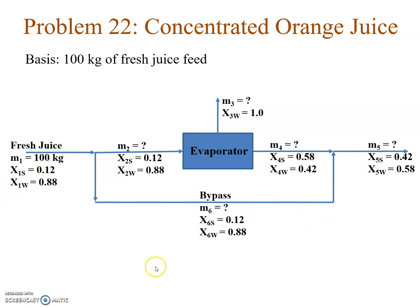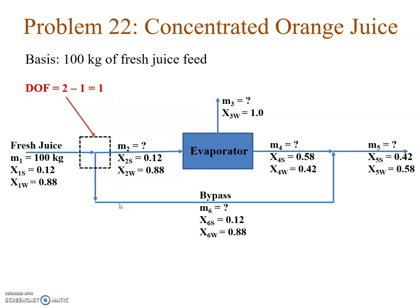We will handle this problem like we handled the recycle problems. The third step is to find the degree of freedom at various subsystems and for the overall system. At the splitting point there are two unknowns and one independent equation — because both components appear in the same ratio in all three streams — so degree of freedom is 1. The equation is m1 = m2 + m6.